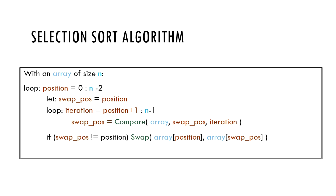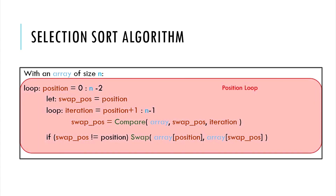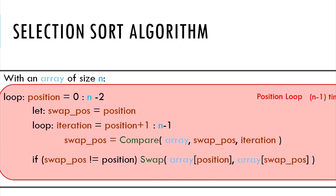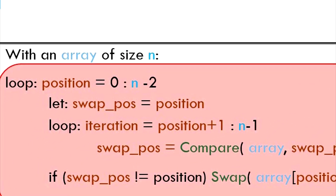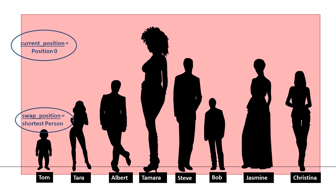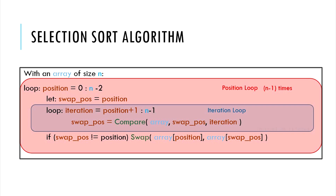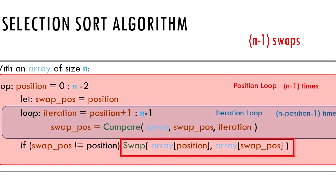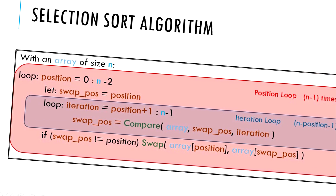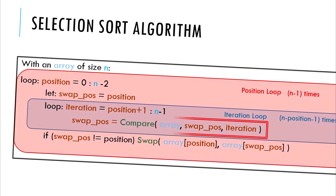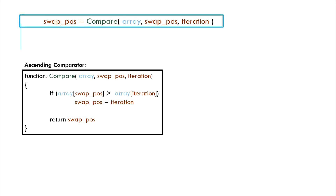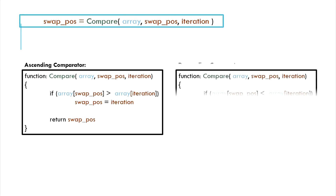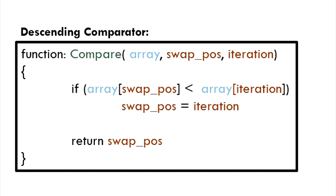Given an array of size n, we loop through n-1 positions, starting at 0 and ending at n-2. The swap position is what we represented earlier as the current shortest person's position — this is the position where the current position needs to make a swap with. Then we have the iteration loop where we compare the element at the swap position with the iteration position. This loop is run n-position-1 times as we established earlier. It is worth mentioning that the swap operation is done in the outer loop — that is the position loop only. Thus, there are only n-1 swaps done.